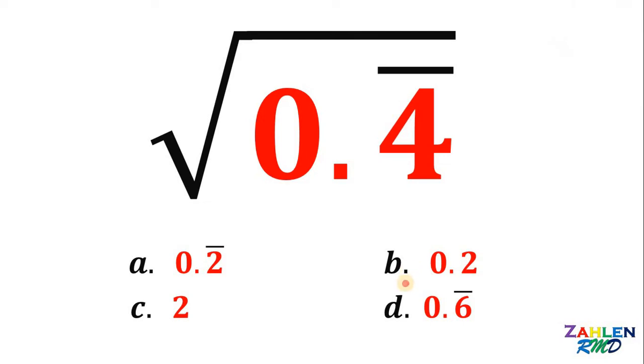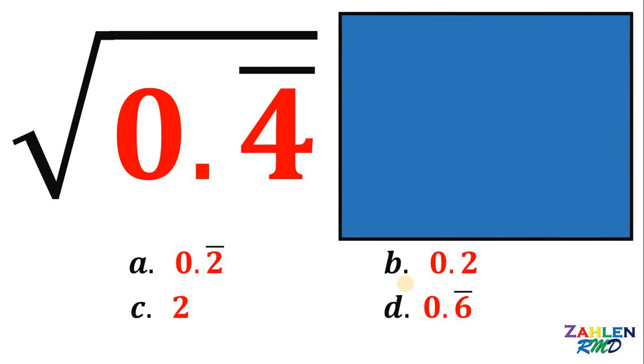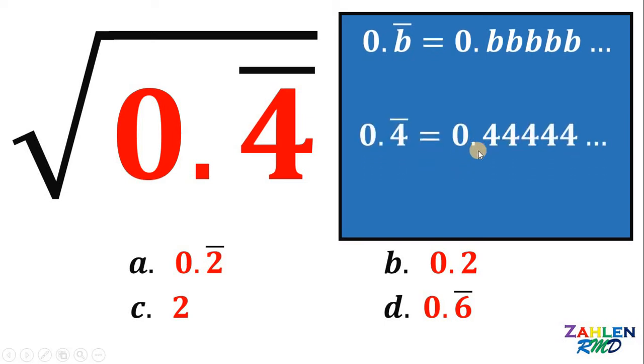Let's answer this question together. First thing to do is what does 0.4 repeating mean? How can we write 0.B repeating, where B is any single digit? 0.B repeating can be written as 0.BBBBB up to infinity, which means 0.4 repeating can be written as 0.44444 up to infinity.